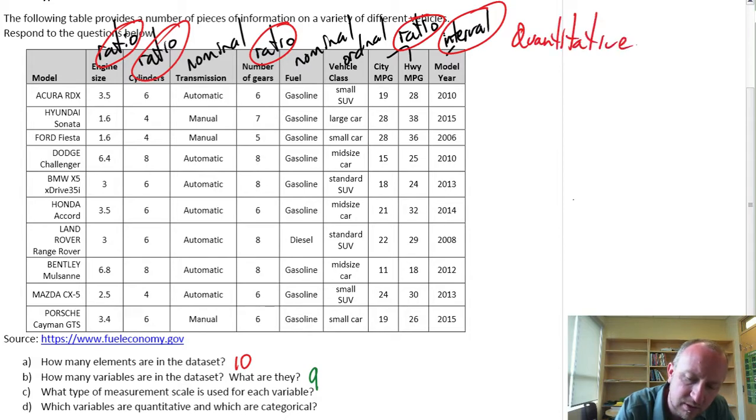So there we've got all of our quantitative variables. And finally I know that nominal variables and ordinal variables, they must be categorical.